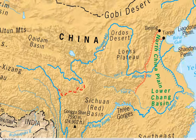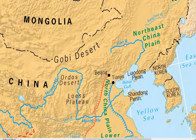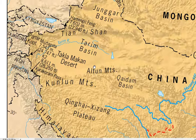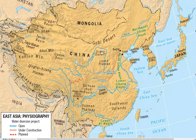Moving further north, we see the most famous river of China and East Asia, the Huang He, also known as the Yellow River. Then, located to the north, is the Liao River. Apart from these four major river systems, other smaller rivers mentioned include the Tarim River, the Han River just north of the Yangtze, and the Wei River, a tributary of the Yellow River.